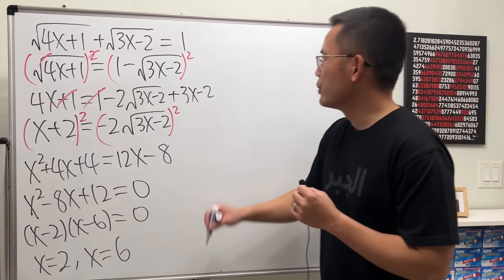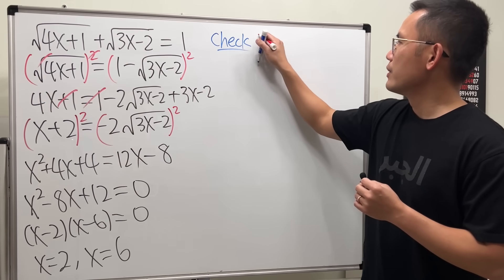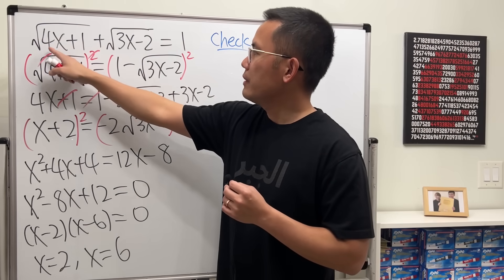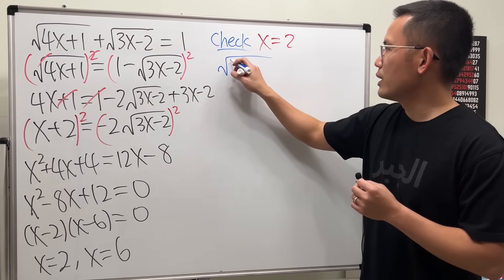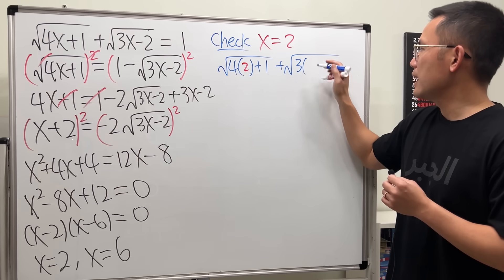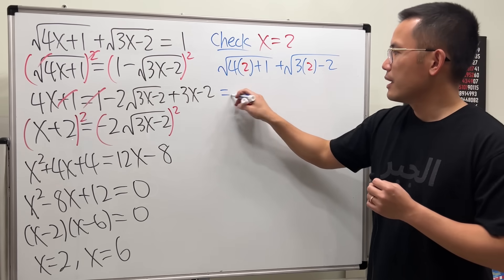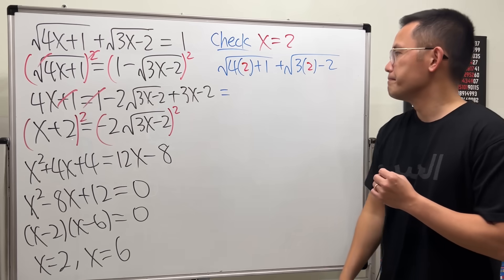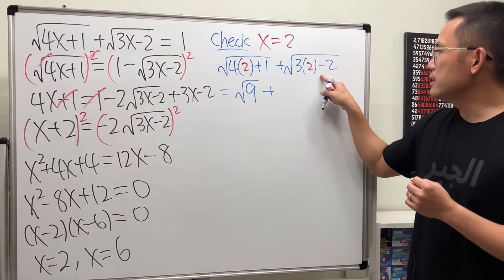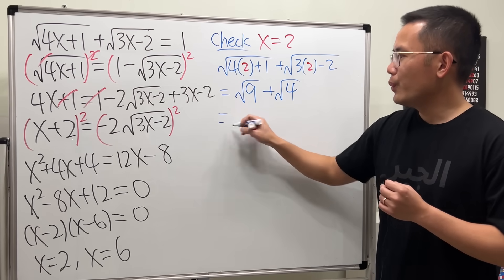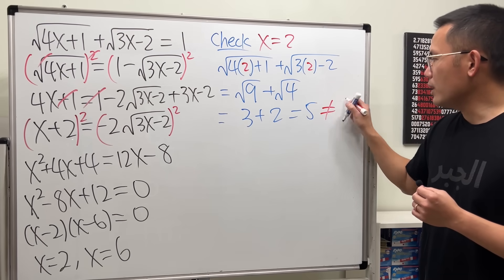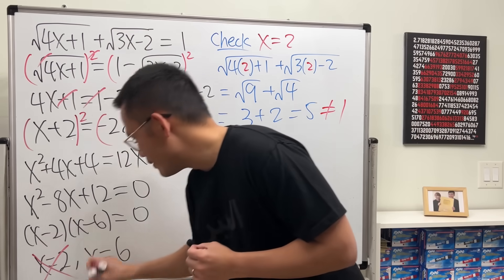Let's check when x equals 2. Plugging 2 in: square root of 4 times 2 plus 1, plus square root of 3 times 2 minus 2 — let's see if this equals 1. That's square root of 9 plus square root of 4, which is 3 plus 2, which equals 5. Of course that's not equal to 1, so no good — that's not a correct answer.